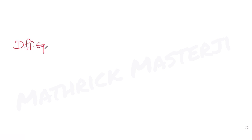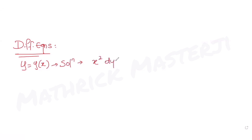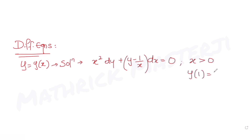Hi guys, I hope you are all doing well. Today's question is from the topic of differential equations. The question tells us that if y = y(x) is the solution of a differential equation given by x² dy + (y - 1/x) dx = 0, with the condition that x is positive.